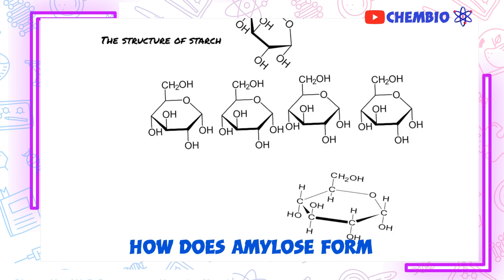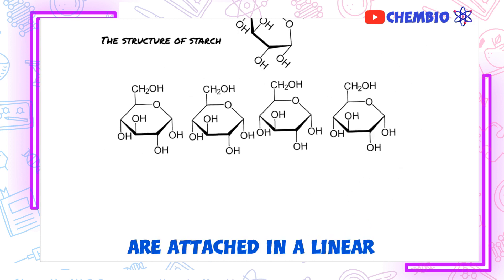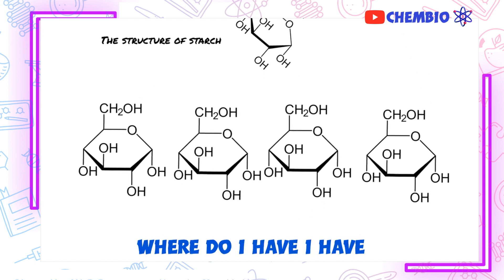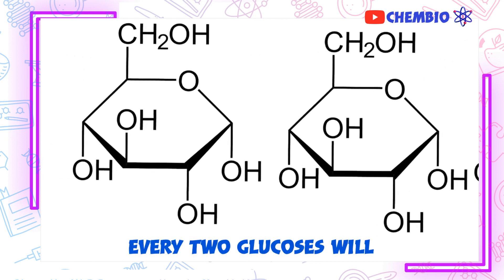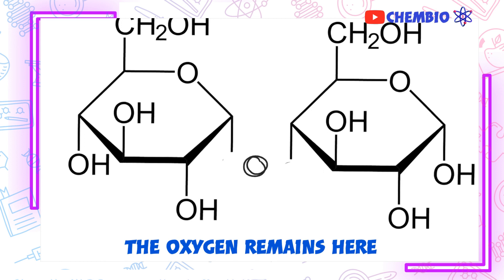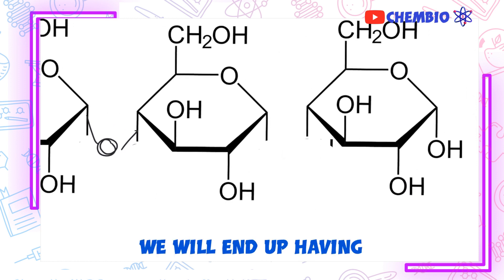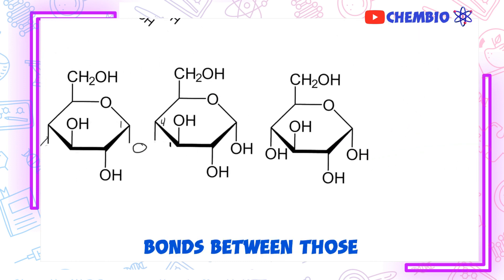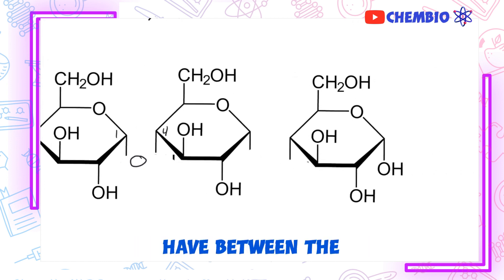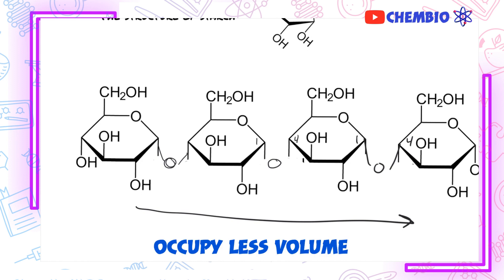Structure-wise, how does amylose form and how does amylopectin form? In the case of amylose, the chains of glucoses are attached in a linear form. What we have here are glucoses, and as you can see, every two glucoses attach and form a bond in the same way we saw in disaccharides — take away OH and H, oxygen remains, and they join. Every two adjacent glucoses do the same thing, and we end up with 1,4-glycosidic bonds between those glucoses. So amylose only has 1,4-glycosidic bonds. It's a linear-shaped molecule which coils on itself and occupies less volume inside the cell.